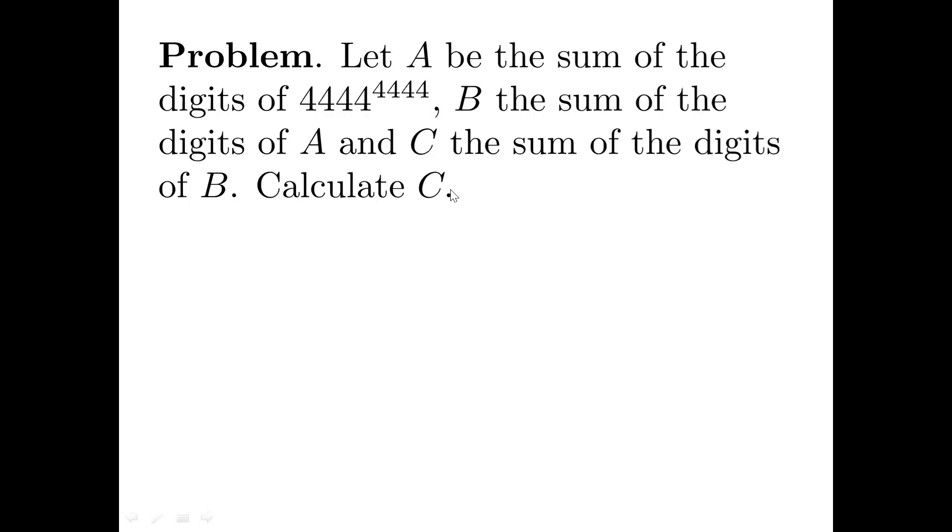Let A be the sum of the digits of 4,444 to the power of 4,444. B is the sum of the digits of A, and C is the sum of the digits of B. Find the value of C.